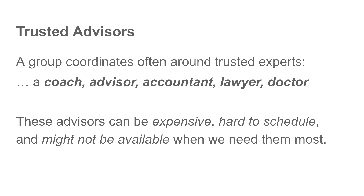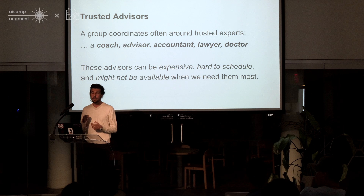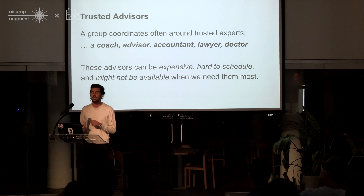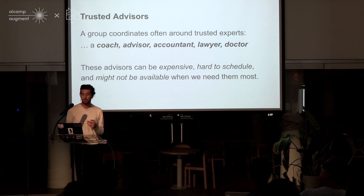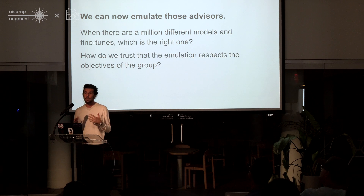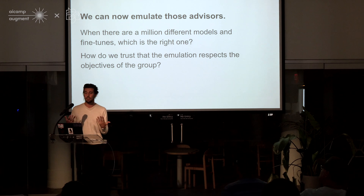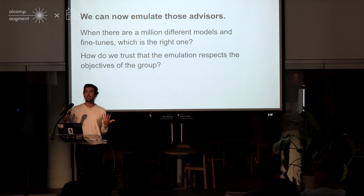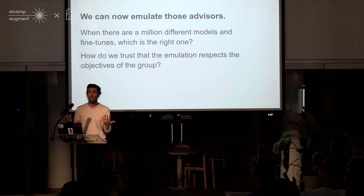One example of a place where an LLM can work is that a lot of groups work around advisors — coaches, accountants, lawyers, doctors. In reality, these advisors are expensive, they're hard to schedule, and they might not be available when you want them. Now we can, with LLMs, emulate these advisors. And then the question is, when there's a million different implementations of a potential advisor, which is the right one to use?